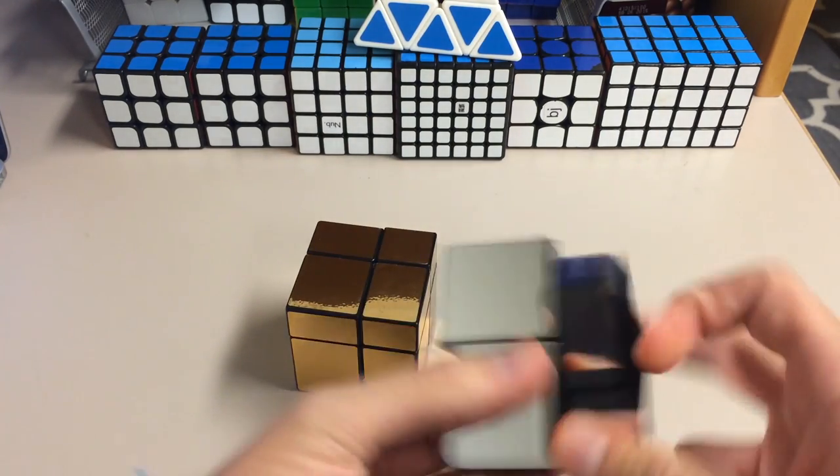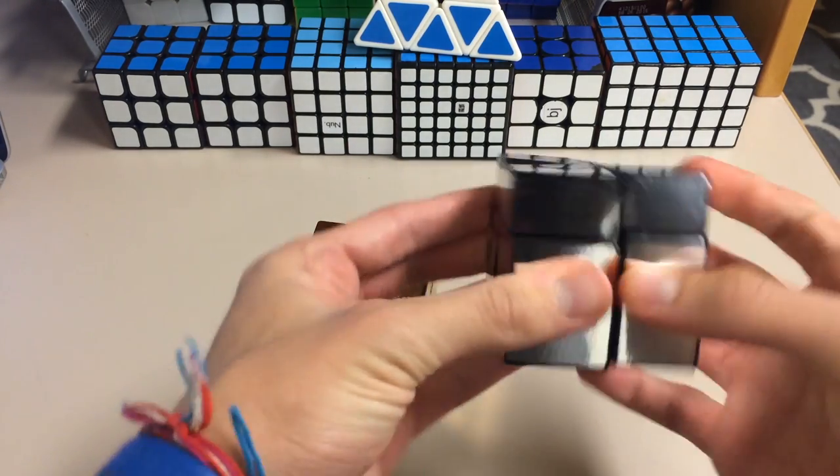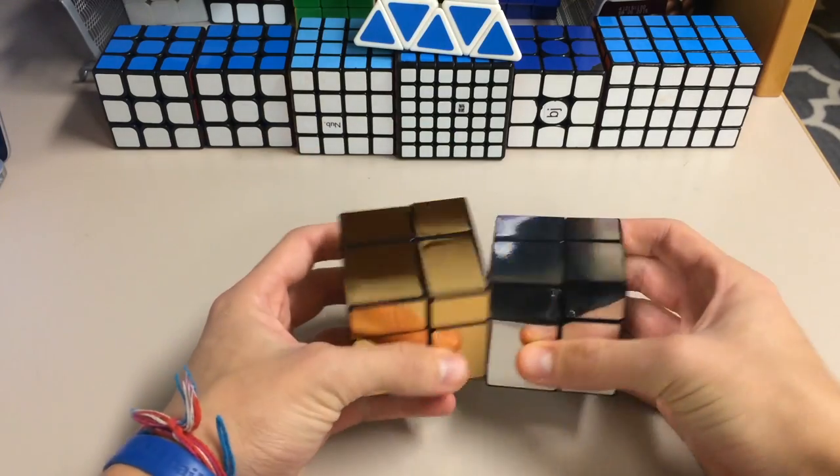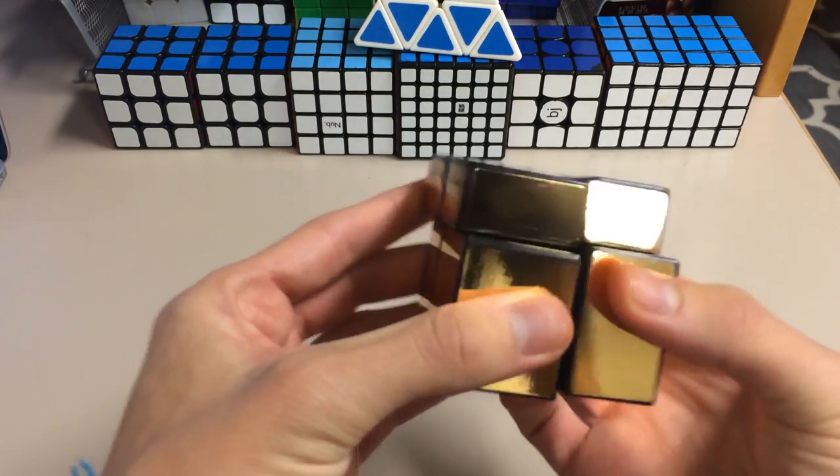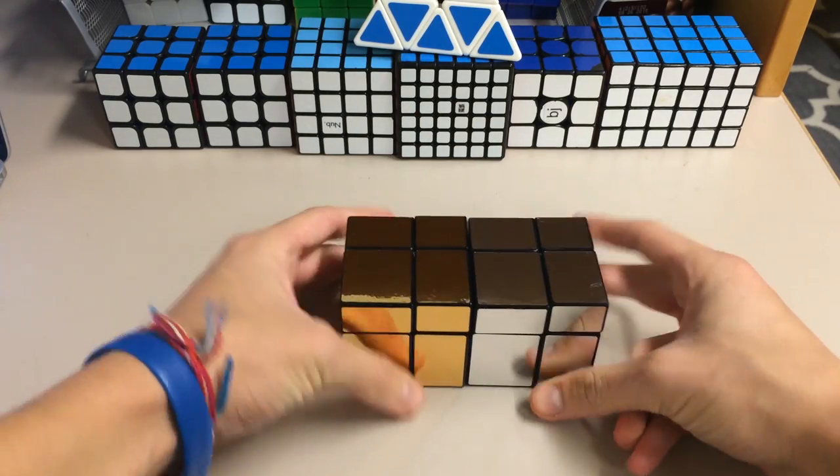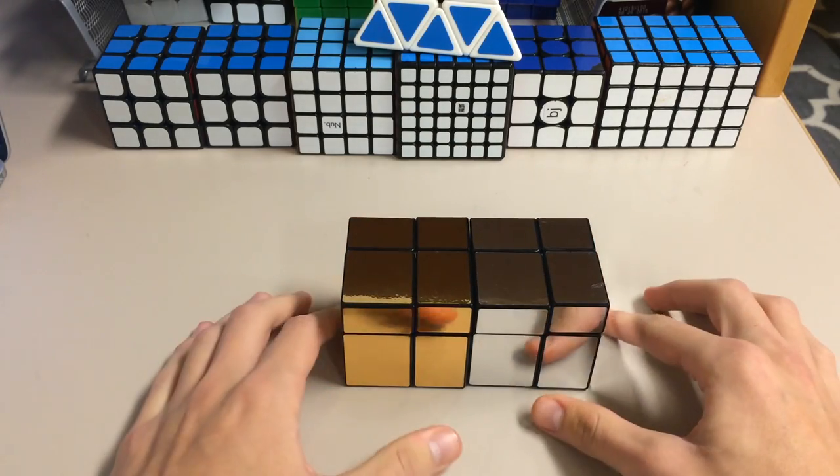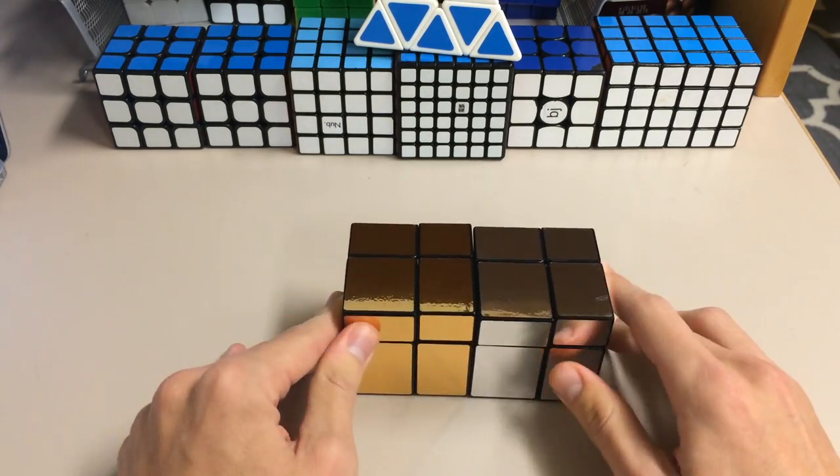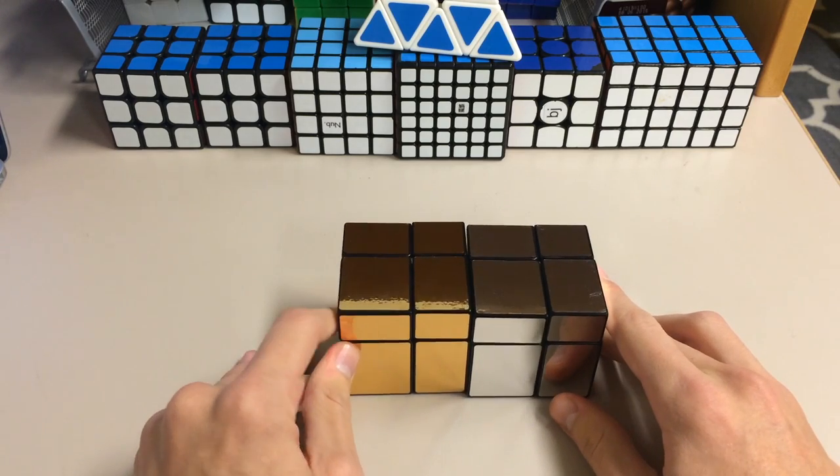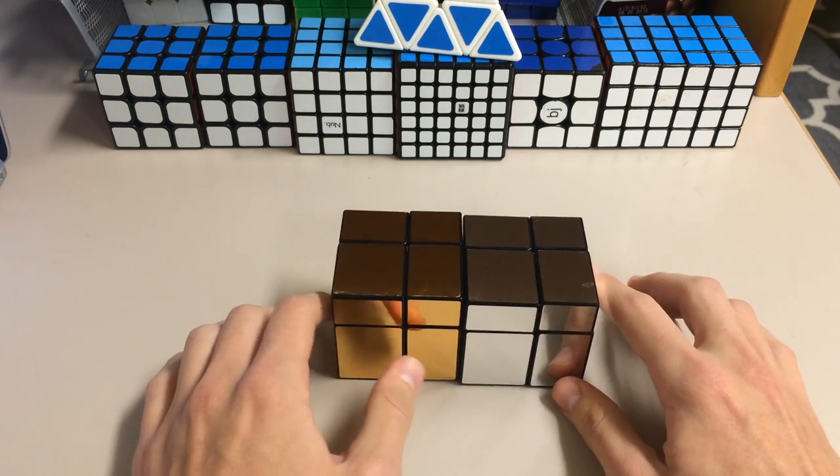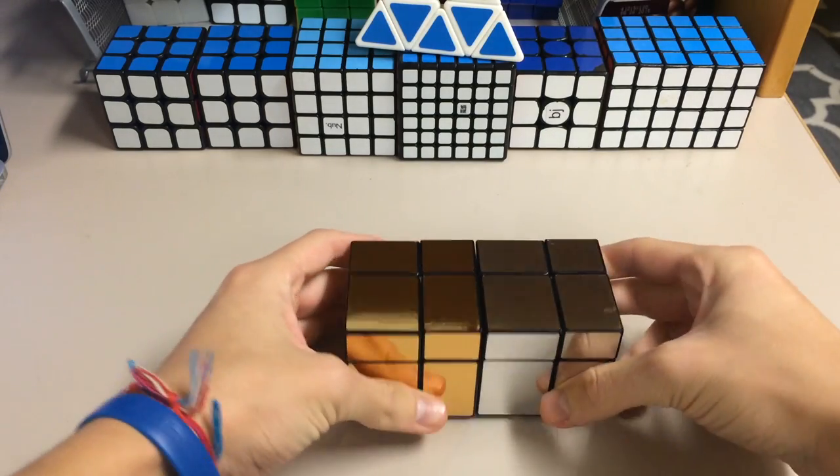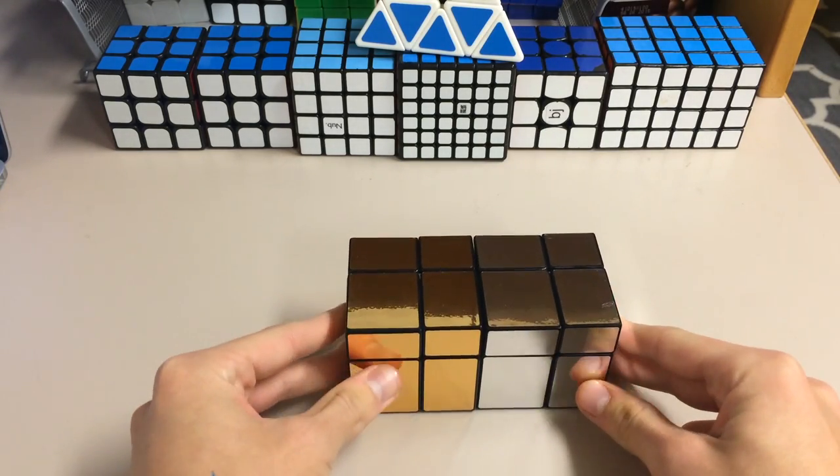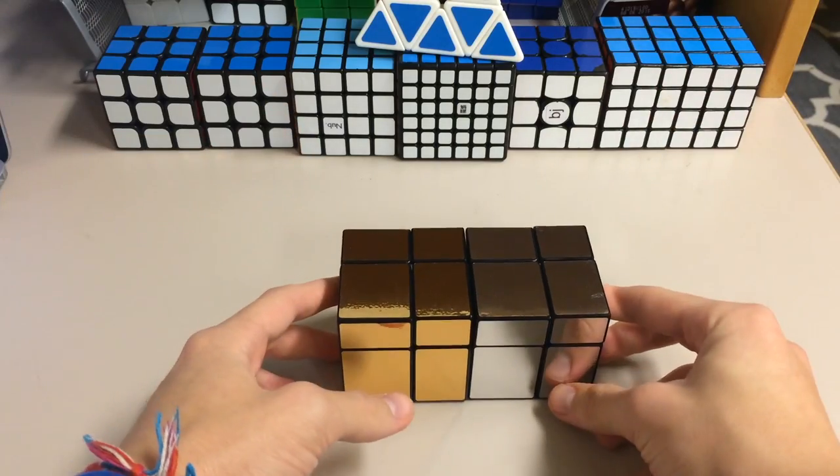So you can get these on thecubicle.us for $10 each. In my opinion, the gold one looks the nicest. I don't really know why. It's just a personal preference. But they have gold and silver for $10. And the company is Fang Gi. Not sure if that has anything to do with Fang Shi. So I highly recommend you guys go out and get yourself one of these mirror block 2x2s on thecubicle.us. I'll have a link to where you can buy it down in the description.